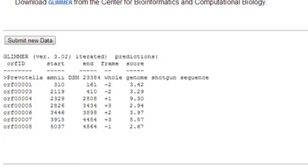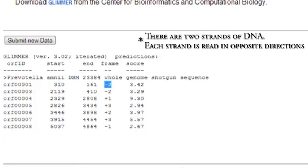So it's predicting from, it says 310 to 161, and that sounds backwards, but the reading frame is minus 2, so it's on the complementary strand, and it would read right to left. So the start codon is at position 310, and the stop codon is at position 161.